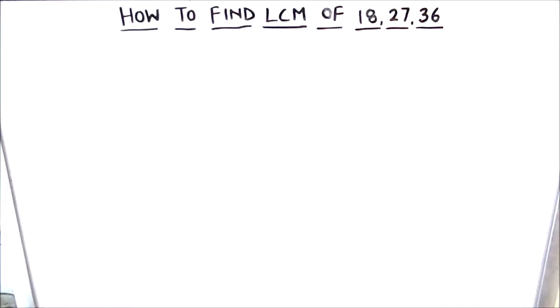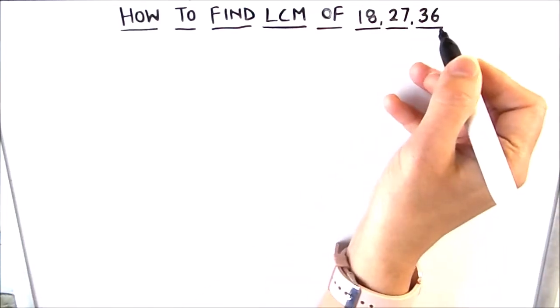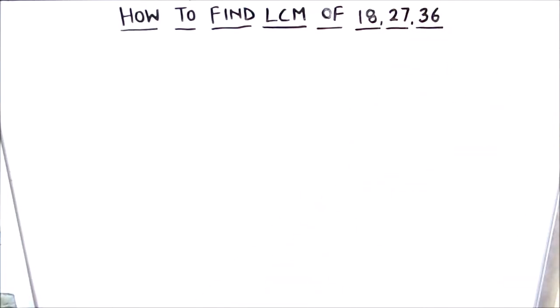We are going to use the prime factorization method for finding the LCM. It is the best method to find the LCM of any number. For finding the LCM through that method, we divide all these numbers by prime numbers and find the factors of the number. And by taking the product of the factors, we can find the LCM of these numbers.